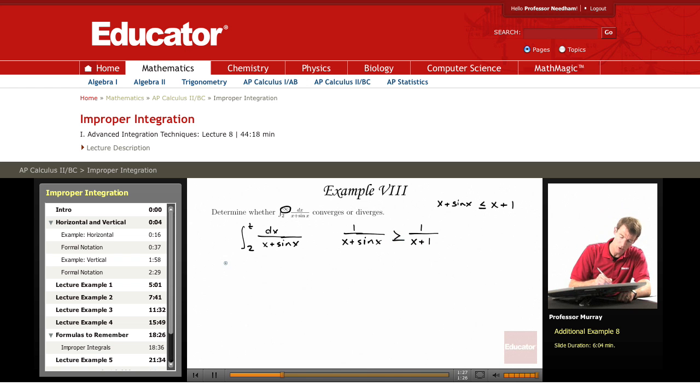So this integral, whatever it is, is bigger than the integral from 2 to t of dx over x plus 1. And that's an easy integral to do. We can use u equals x plus 1. And so we'll get the natural log of x plus 1 evaluated from x equals 2 to x equals t.